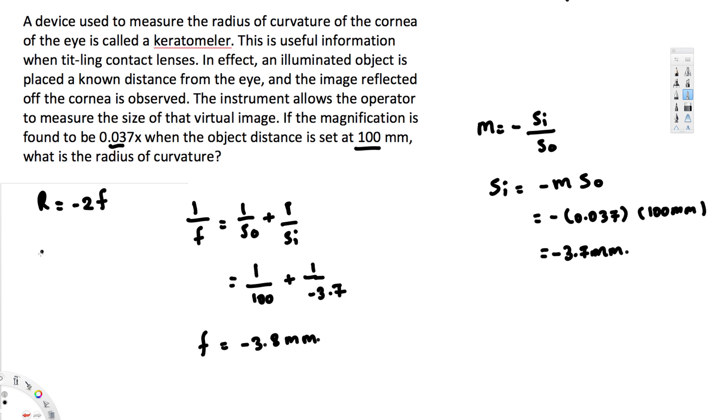Now we can find the radius of curvature. r = -2f = -2(-3.8) = 7.6 millimeters, which is 0.76 centimeters. That's the final answer for this question. I hope this helps, thanks for watching.